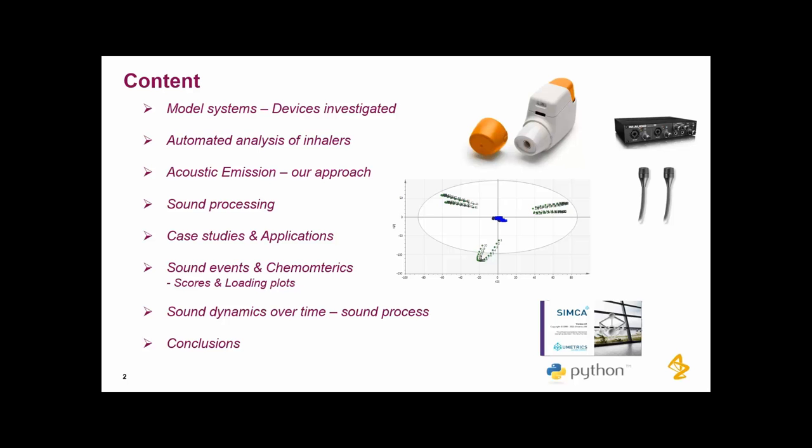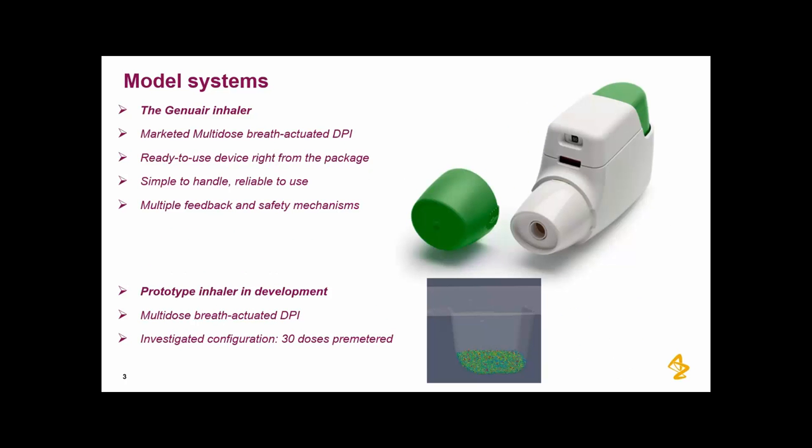We will also go in some degree in-depth on our chemometrics and how we use that in terms of connecting to the sound events that we look at, and we will talk about what we call a sound process, how the sound develops over time. And we could go on talking about this for a long time, but when you see a slide entitled conclusion we're actually approaching the end. In terms of the model systems, we will look at two different inhalers today. One is a Genuair inhaler which is developed by our partner Sofotec in Germany. That is a marketed inhaler and it's a multi-dose breath actuated dry powder inhaler.